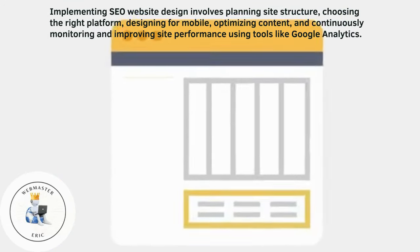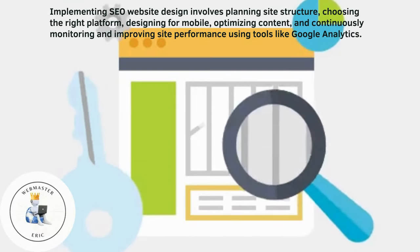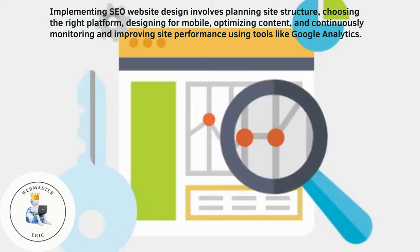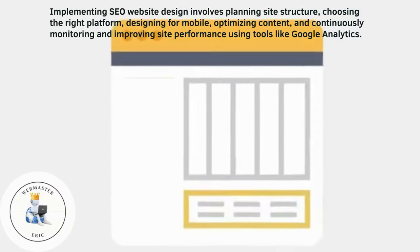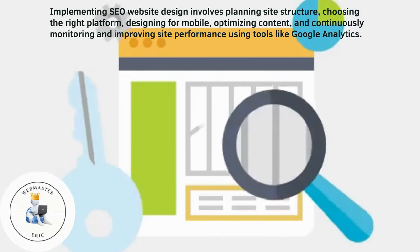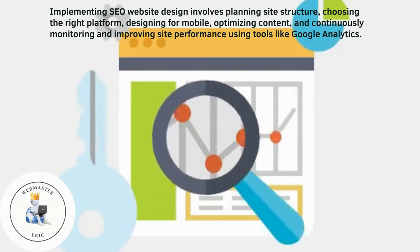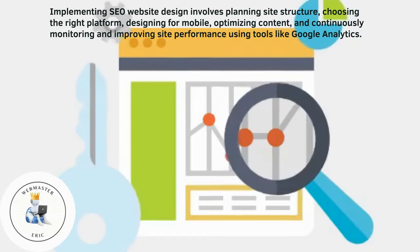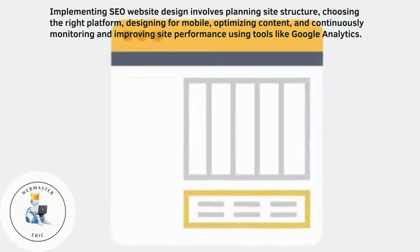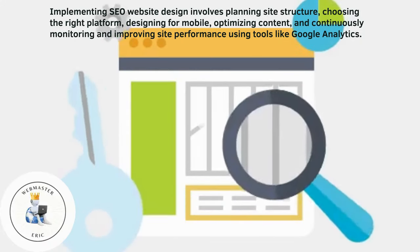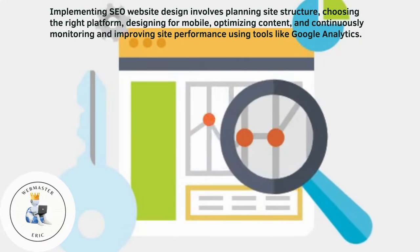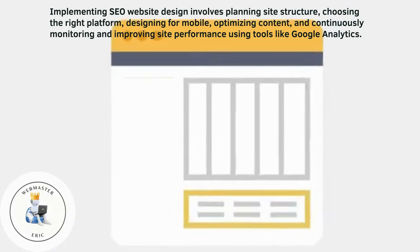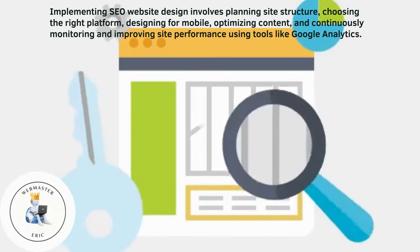Implementing SEO website design involves planning site structure, choosing the right platform, designing for mobile, optimizing content, and continuously monitoring and improving site performance using tools like Google Analytics.